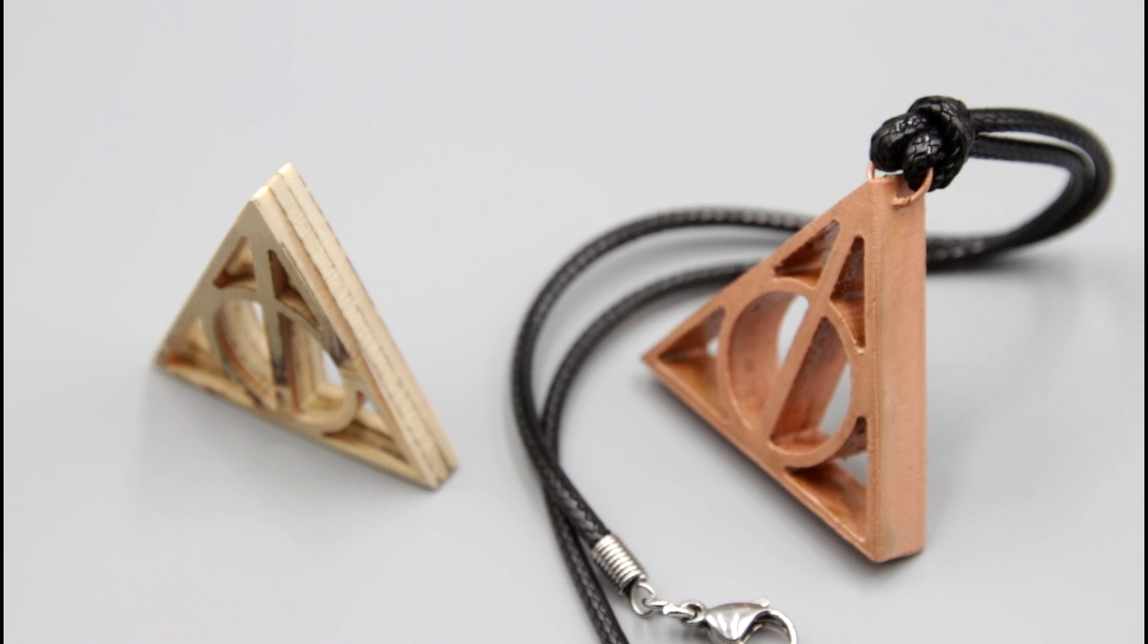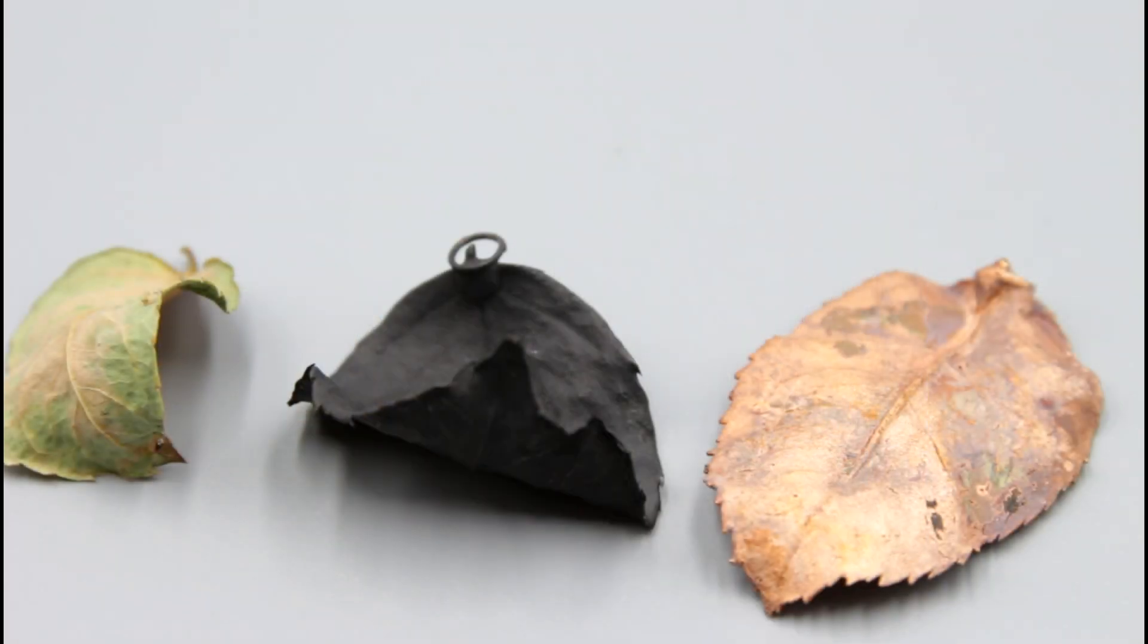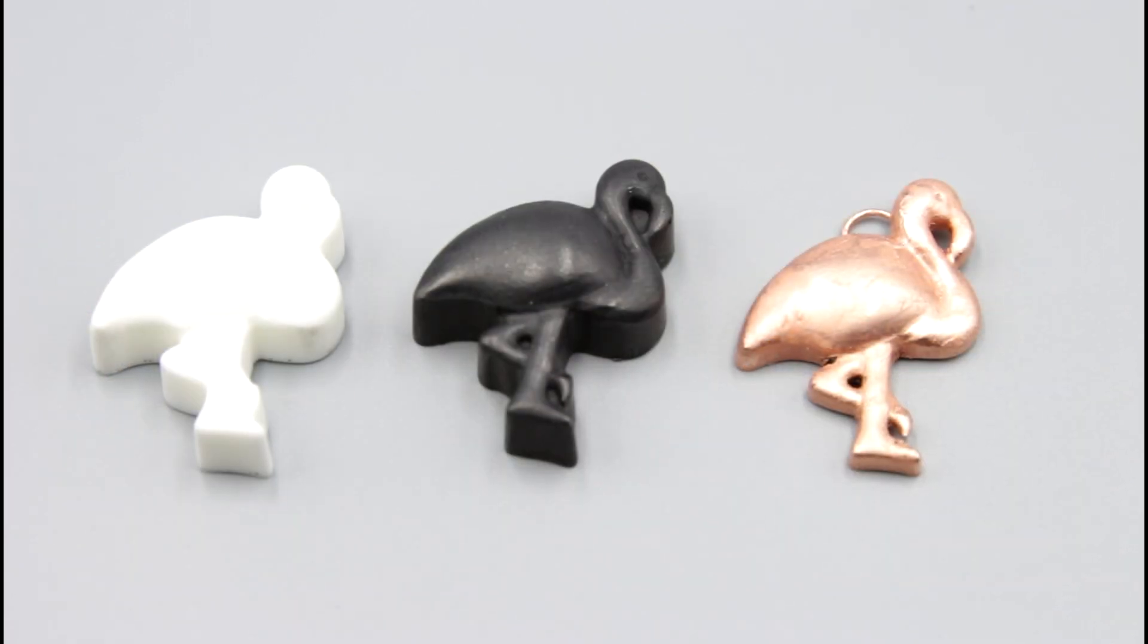In the video, I went back and forth and called the process electroforming and electroplating. There is a difference, and I have found that out. Electroforming is going through this process and adding metal to a non-metallic object, and electroplating is adding metal to a metallic object. So that apparently is the difference between electroforming and electroplating.